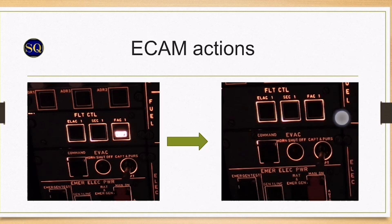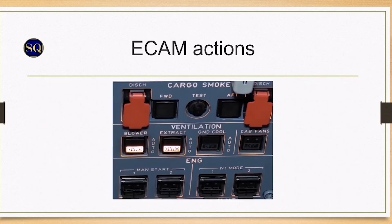Cooling air is supplied to the avionics bay by the air conditioning system and exhausted overboard through the extractor valve. Special note: if you are flying an IAE-powered aircraft, the engines will be in N1 degraded mode and there is no N1 limit protection, so an overboost can occur with thrust levers in full forward position. Care must be taken when selecting thrust on a go-around.